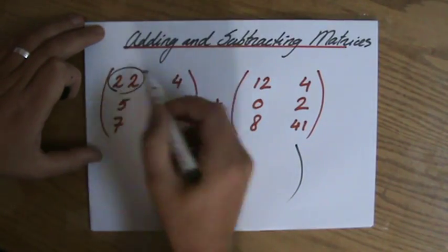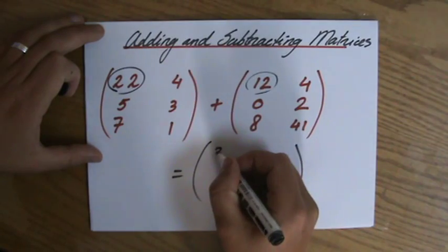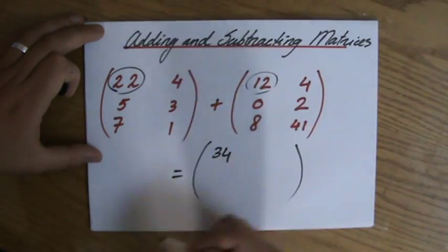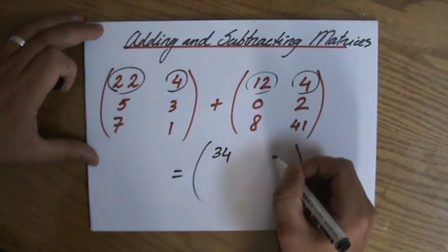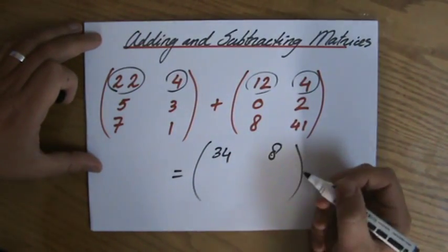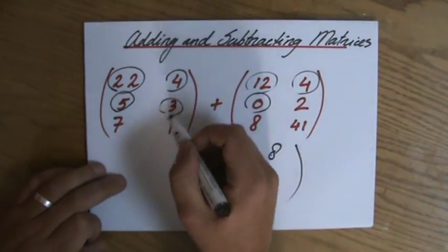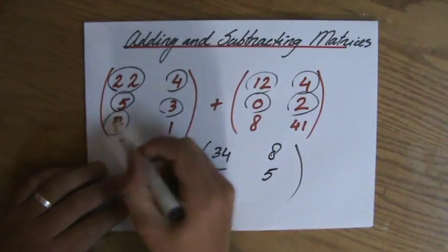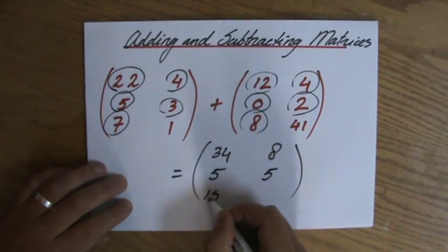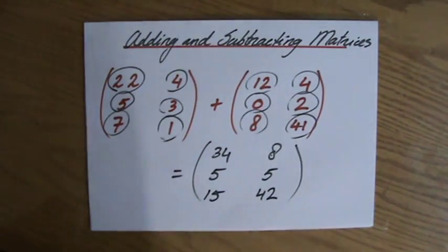Which means that 22 I add with 12, so 22 plus 12 is 34. And the next one is 4, and that happens also to be 4, so 4 plus 4 equals 8. 5 plus 0 is 5, 3 plus 2, that will be 5 as well. 7 plus 8, 15, and 1 plus 41 is 42.